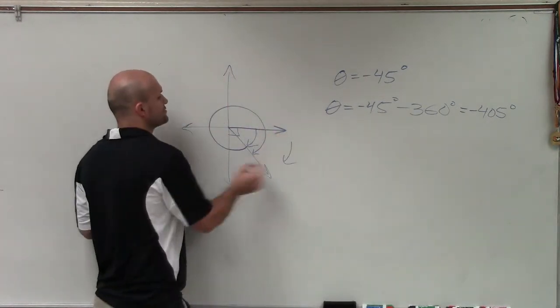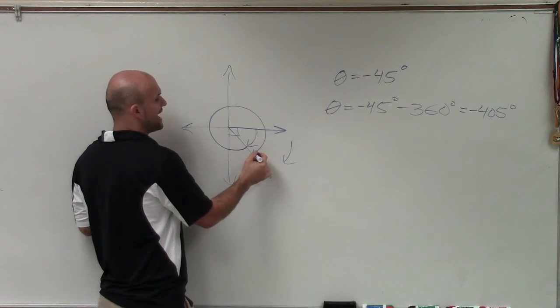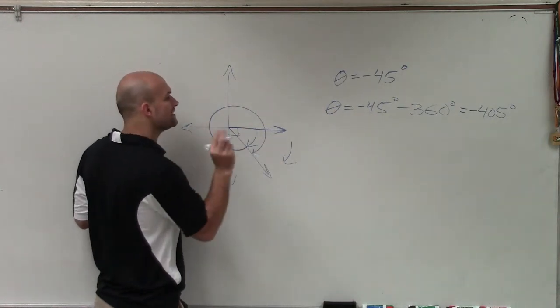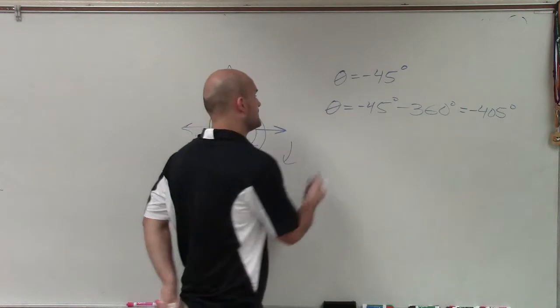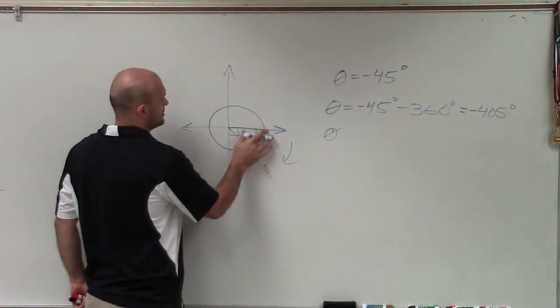So all I'm doing is just rotating. Now obviously I could keep on going, I can keep on adding revolutions in the negative direction, but I just want to find the smallest coterminal angle. Then I need to find one in the positive direction. So let's eliminate this.